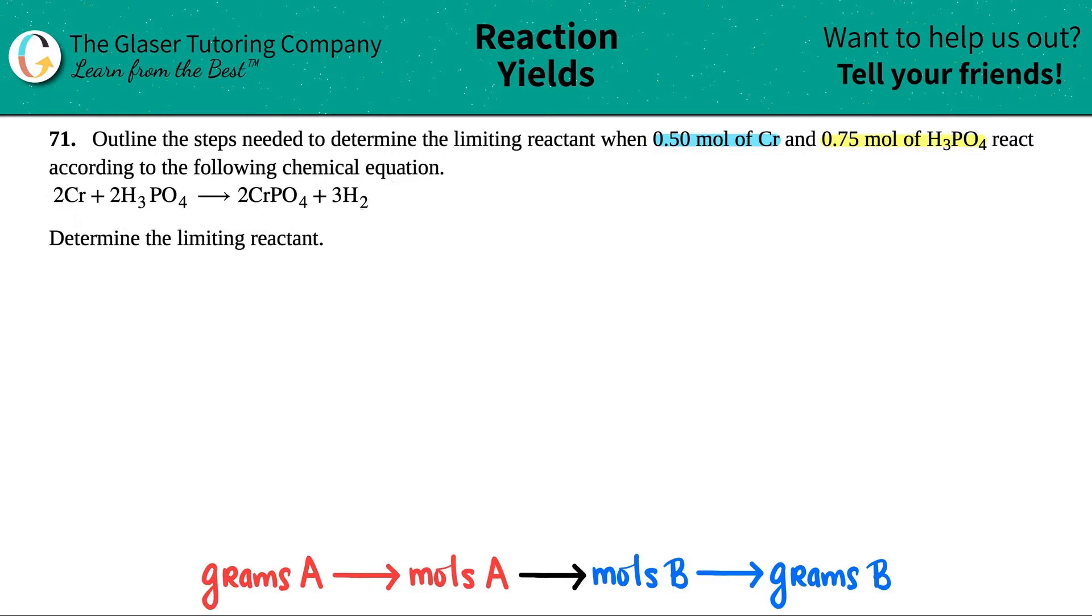Thank goodness they give us a balanced equation. I'm just going to write that down over here. You know I need to write it big, right? So 2Cr plus 2H3PO4 is going to produce 2CrPO4 and then it looks like 3H2.